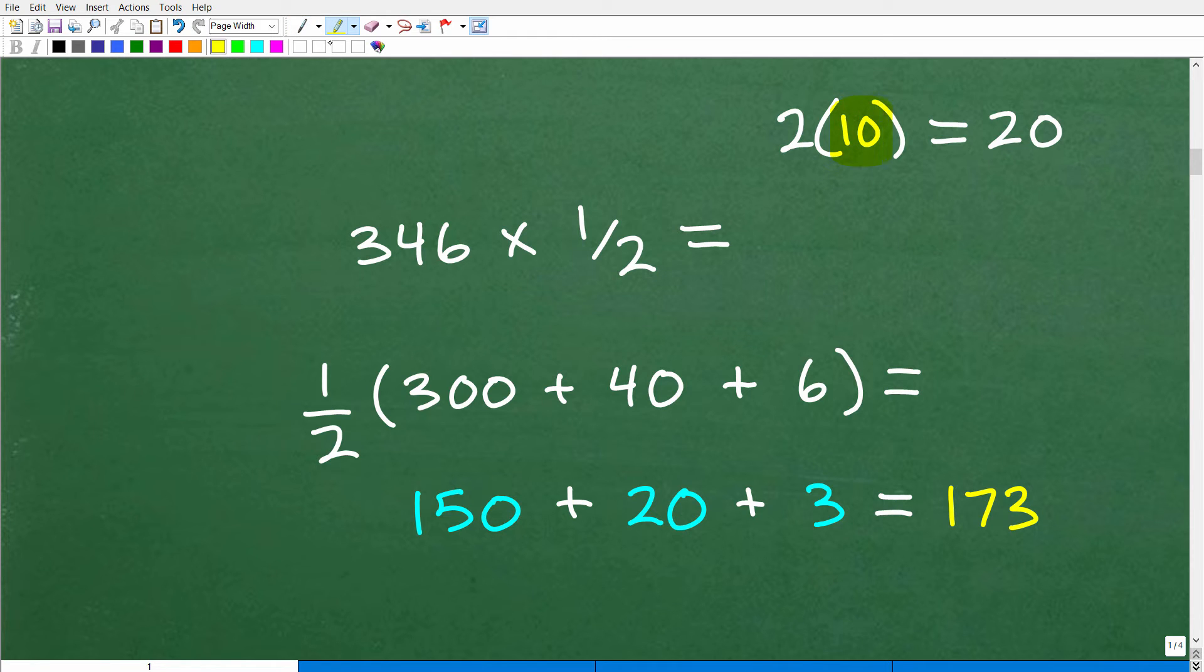All right. Now, let's kind of do something here. Let's do this problem. We're going to do it in a different way. So 2 times 10 is 20. But let's think of 10 differently. Let's write 10 as 7 plus 3. Okay. So 2 times 7 plus 3. 7 plus 3, of course, is 10.